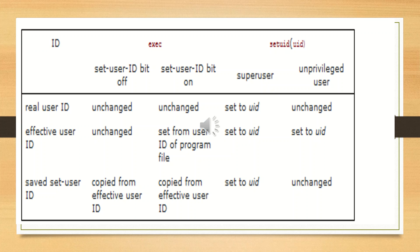System privileges — such as being able to change the system's notion of the current date — and access control — such as being able to read or write a particular file — are based on user and group IDs. When a program needs additional privileges, it needs to change its user or group ID to one with appropriate access. In general, we try to use the least privilege model when designing applications. We can set real user ID and effective user ID with the setuid function, and similarly set real group ID and effective group ID with the setgid function.